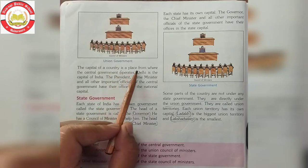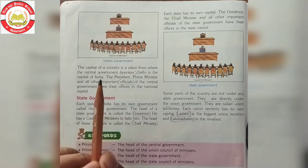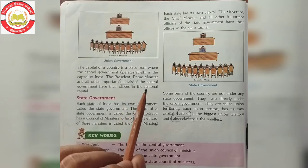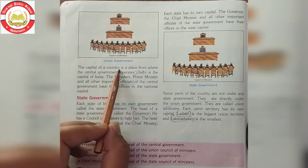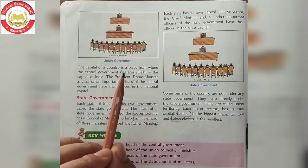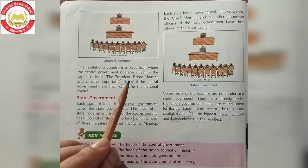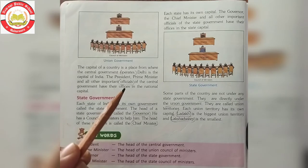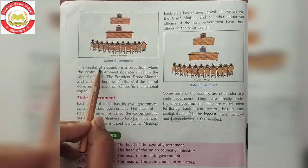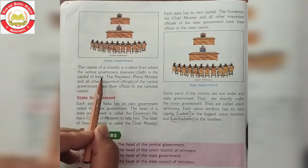The capital of a country is a place from where the central government operates. Now we will understand the meaning of a capital. Capital city jaise Delhi — wo kyun capital hai? The capital of a country is a place from where the central government operates, matlab jo government hai, jo hamari poori country ko control kar rahi hai, unke saare offices wahaan rahenge. Capital se. Delhi is the capital of India.